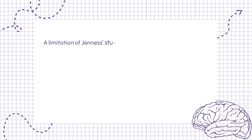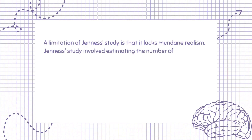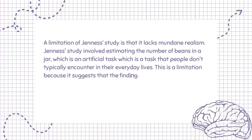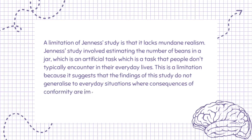A limitation of Jeunesse's study is that it lacks mundane realism. Jeunesse's study involved estimating the number of beans in a jar, which is an artificial task that people don't typically encounter in their everyday lives. This is a limitation because it suggests that the findings of this study do not generalize to everyday situations where the consequences of conformity are important and where people interact with groups more directly.